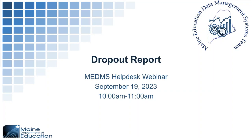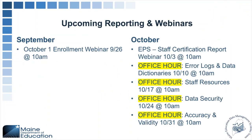It looks like we're holding pretty steady, so we'll go ahead and get started. Today we're going to be going over the dropout report, which will be due in October. Next week we have a webinar on Tuesday again at 10 a.m. for the October 1 enrollment report for EPS. Please feel free to join us — links can be found on the webinar page of the Helpdesk website.